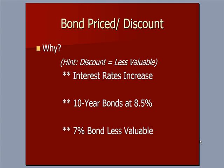Let's talk about bond price at a discount first. The hint is that when we buy anything at a discount, that means we're buying something for less than what the original price of the bond was. That's the thing to remember with bond accounting as well.